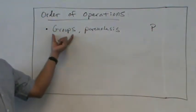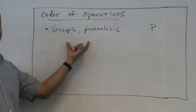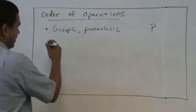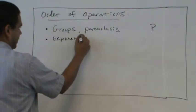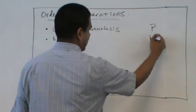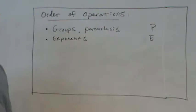You guys know what comes after parentheses? Exponents. Exponents. So we have exponents. Very good.